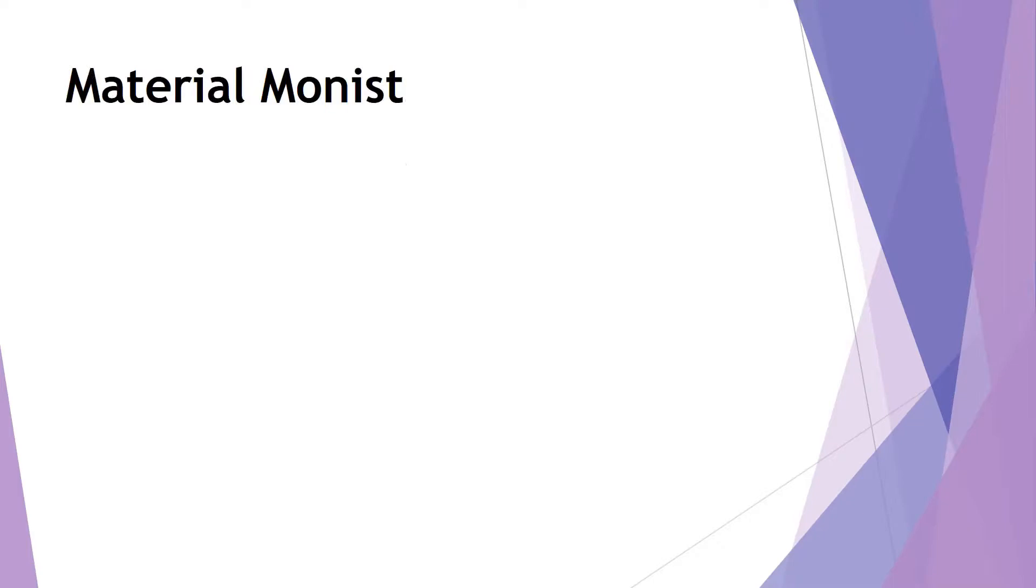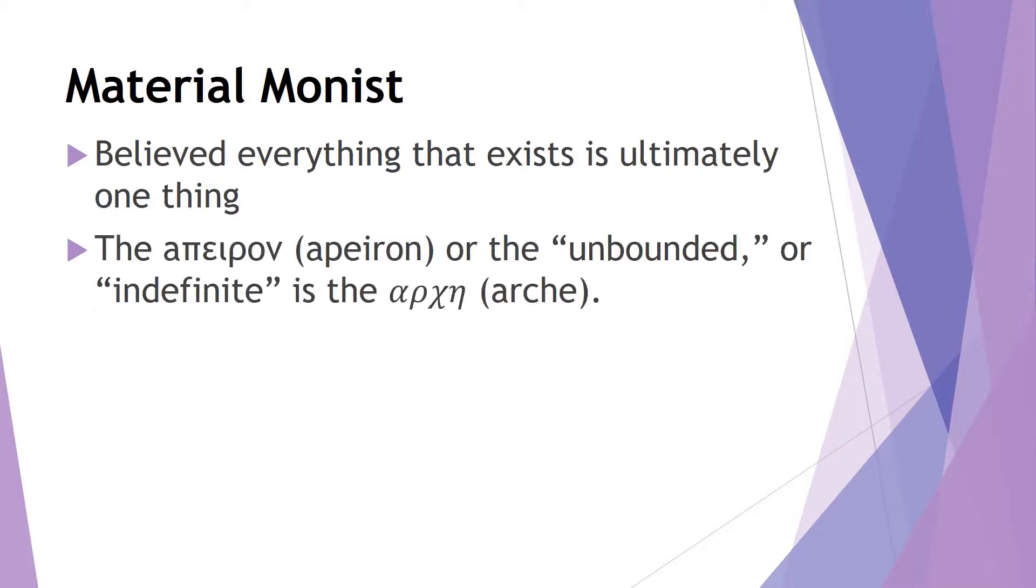Anaximander is a material monist, and that means that he believed everything that exists is ultimately just one thing. That's what a monist is in terms of our context right now, and for Anaximander, the one thing is the Apeiron.